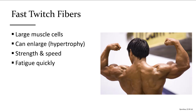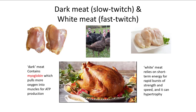Fast twitch fibers work only for short bursts — rapid, quick movements and high strength — but not for long duration. These fibers can hypertrophy or enlarge to accommodate greater strength, but they fatigue very quickly. The dark meat in a turkey is slow twitch, while the white meat is fast twitch. Turkey breast is white meat because turkeys rarely fly, while the thigh muscles — used constantly for walking — are dark slow twitch.